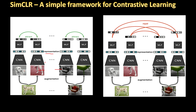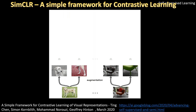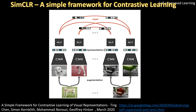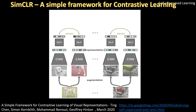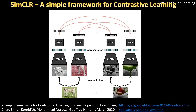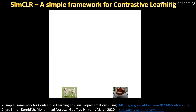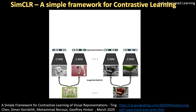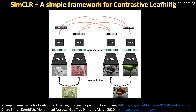These two views of the same image — two different augmentations of the same image — form the positive pair, and one view of one image and another view of another image form the negative pair. The positive pairs attract and the negative pairs repel. After encoding, it's passed through an MLP projection head, and then the projections are compared and learned such that different views from the same image attract and different views from different images repel. That's the idea of contrastive learning.